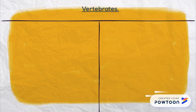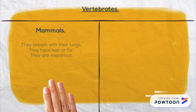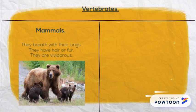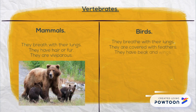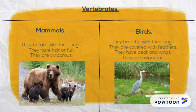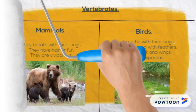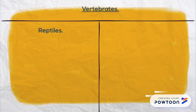Characteristics of the groups of vertebrates. Mammals — they breathe with their lungs, they have hair or fur, and they are viviparous. Birds — they breathe with their lungs, they are covered with feathers, they have a beak and wings, and they are oviparous. Reptiles — they breathe through lungs, they are covered with scales, and they are oviparous.